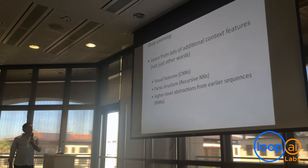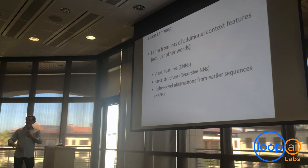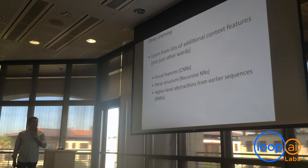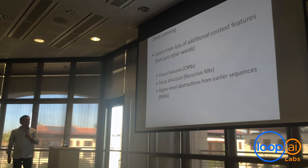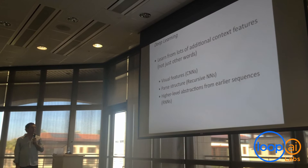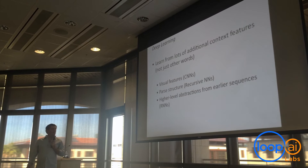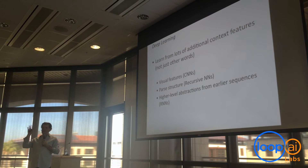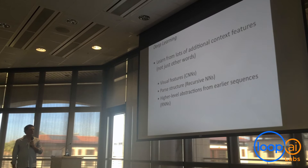Another thing you can do is learn from lots of additional context features — not just other context words, but other things as well. For example, there are a lot of studies lately incorporating visual features, plotting them into the same representational space as semantic features. You can use parse structure — Richard Socher was doing a lot of work with recursive neural networks where you feed in a parse tree as additional context. And you can use higher-level abstractions from previous information, which is the general idea of recurrent neural networks.